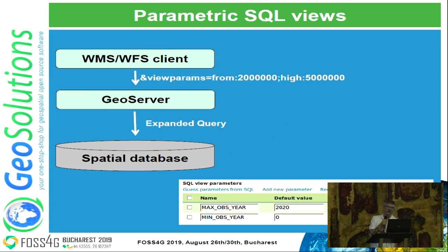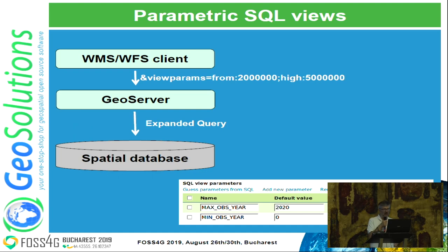How does a parametric SQL view work? You can use them through the usual WMS or WFS clients, and you can interact in a more direct way with the underlying database. When you configure a layer in your server to be used by WMS and WFS, you usually only specify the table from the database. But with SQL views, you can specify a SQL query instead of a simple table, so you can interact with your spatial database more directly.